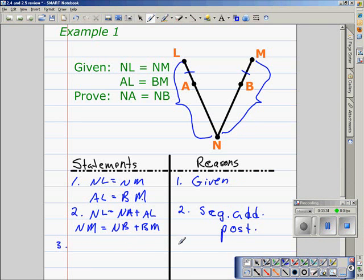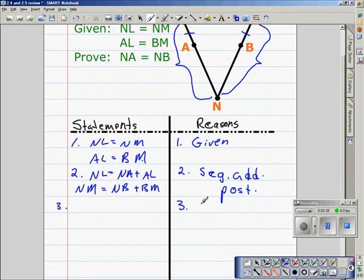Next, using substitution, because we are given that NL is equal to NM, we can say that NA plus AL is equal to NB plus BM. We'll be replacing these expressions for these monomials from the given.